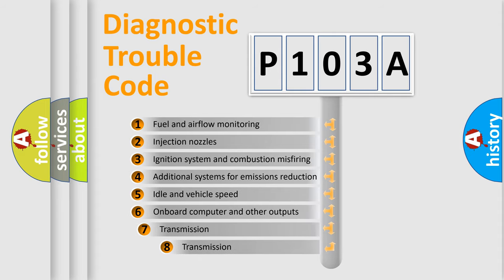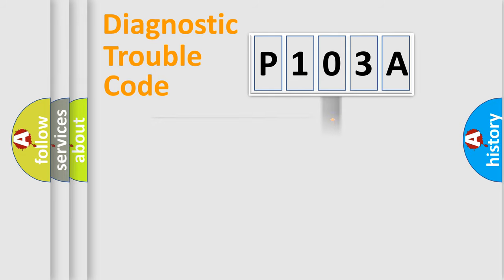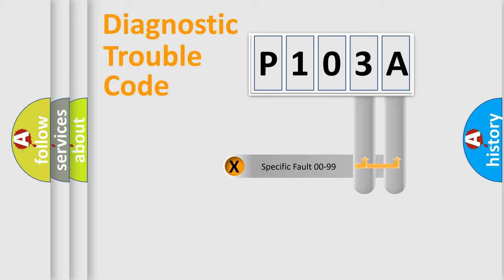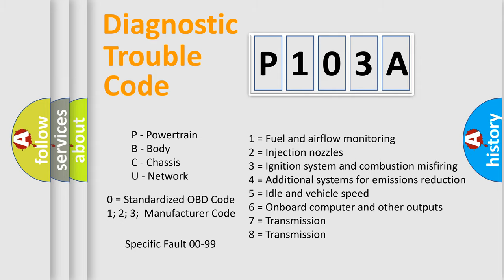The third character specifies a subset of errors. The distribution shown is valid only for the standardized DTC code. Only the last two characters define the specific fault of the group. Let's not forget that such a division is valid only if the other character code is expressed by the number zero.